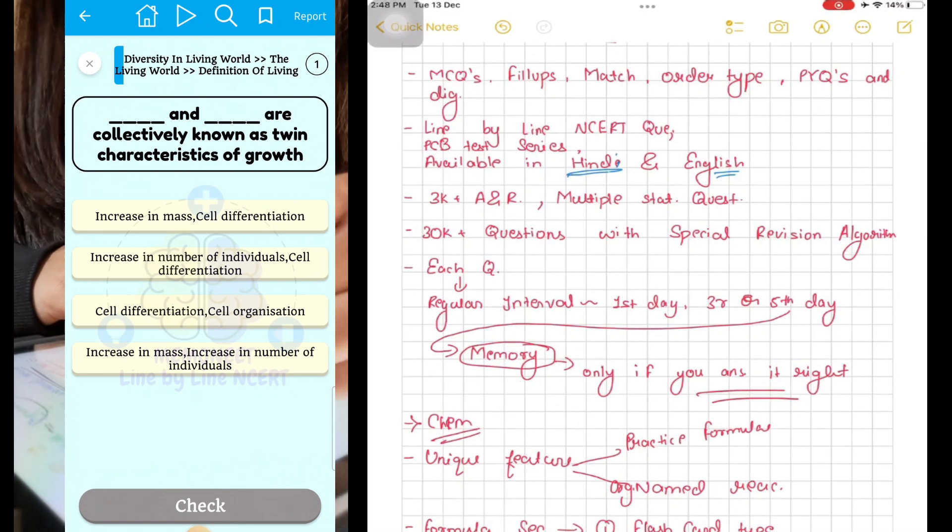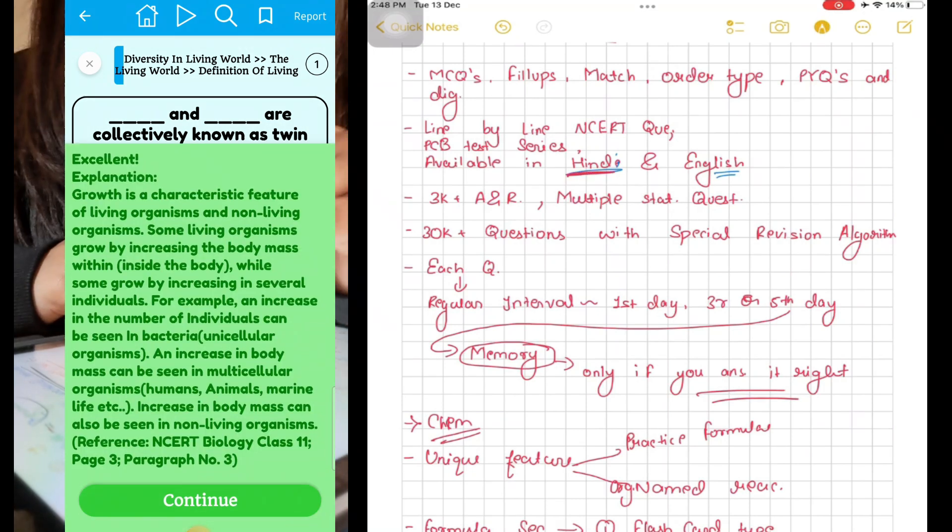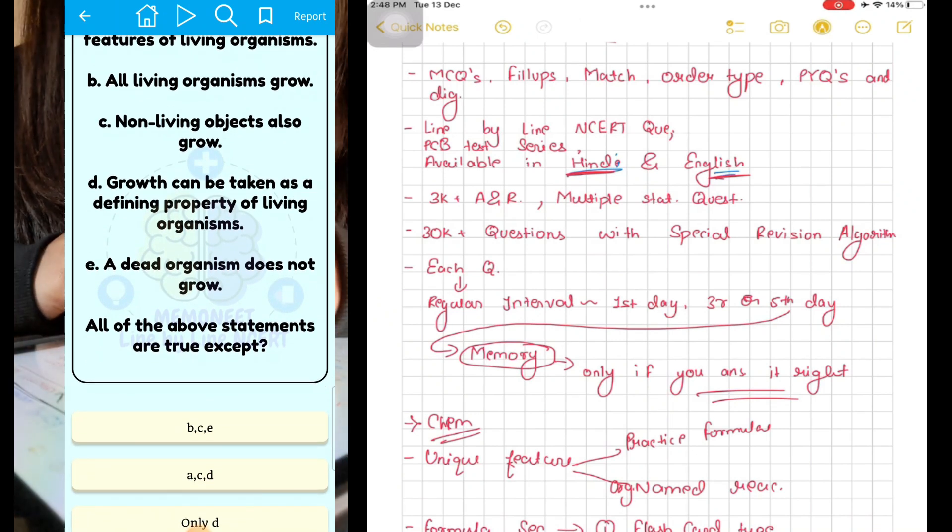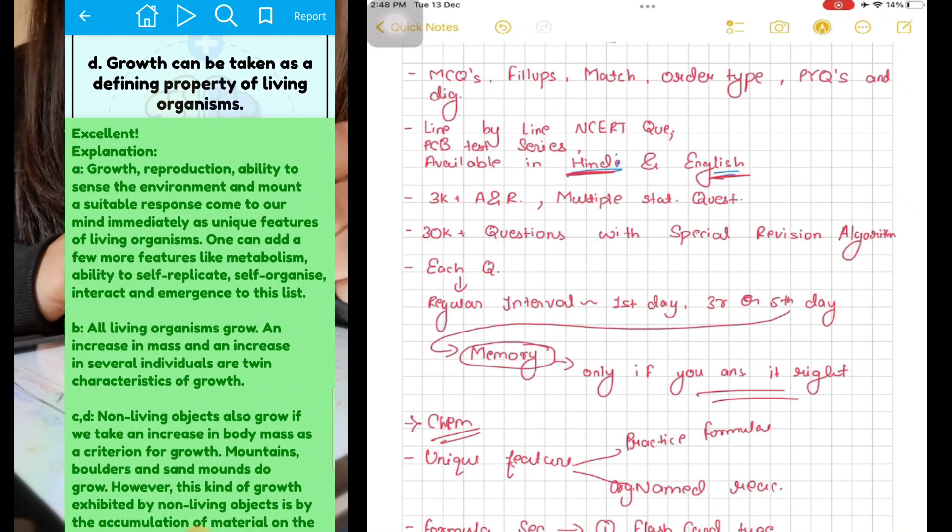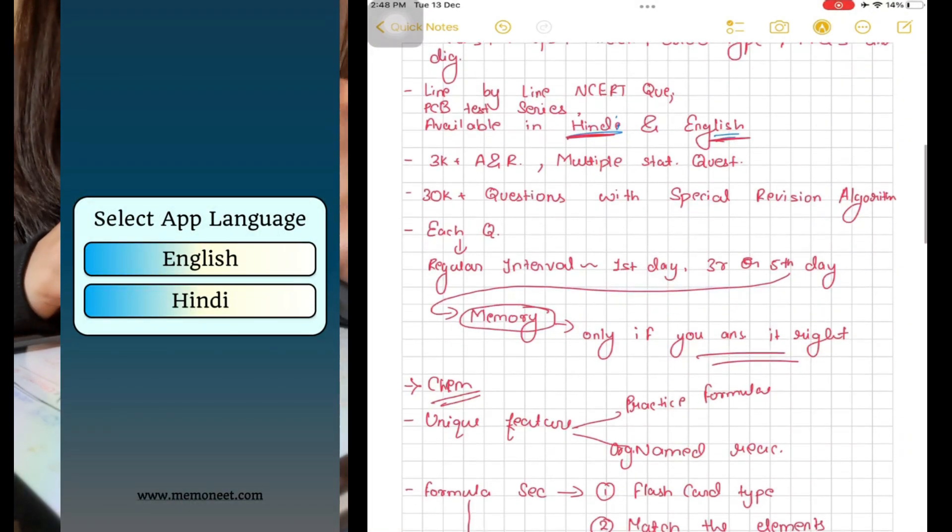Memo NEET is really a very helpful app for NEET aspirants. It has line-by-line NCERT questions and tests for physics, chemistry, and bio. This app is now available in Hindi and English. It has almost 300+ assertion reasoning and multiple statement questions for biology and 30,000 questions that come with...